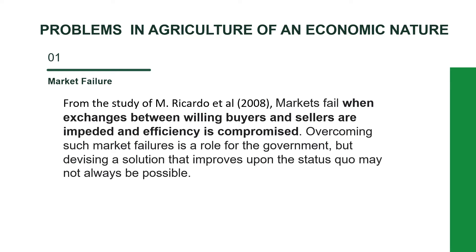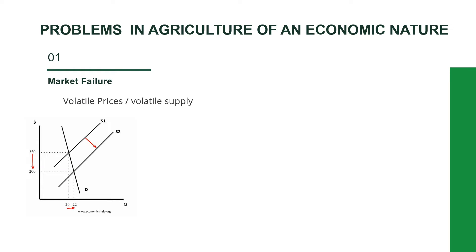The first problem is market failure. From the study of Ricardo et al. (2008), markets fail when exchanges between willing buyers and sellers are impeded and efficiency is compromised. Overcoming market failure is a role for the government, but devising a solution that improves upon the status quo may not always be possible. Another aspect of market failure is the volatility of prices and supply — an abundant harvest leads to an increase in supply and a significant fall in prices, for example from 350 to 200 US dollars.